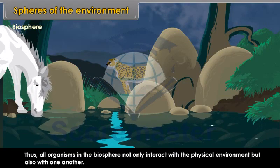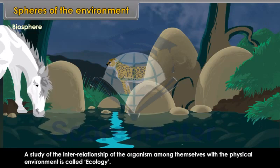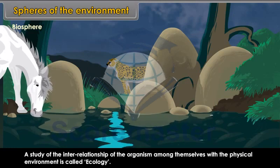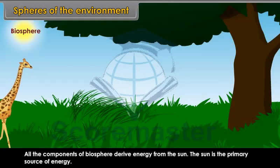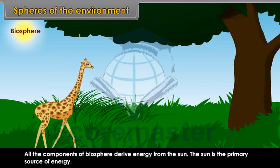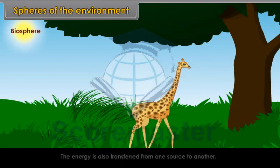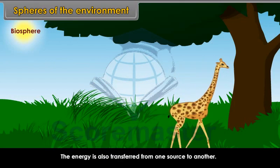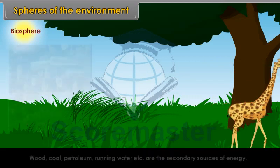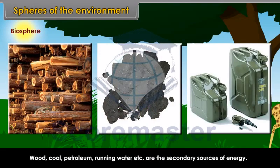A study of the interrelationship of organisms among themselves with the physical environment is called ecology. All the components of biosphere derive energy from the sun, which is the primary source of energy. The energy is also transferred from one source to another. Wood, coal, petroleum, running water, etc. are the secondary sources of energy. In the biosphere, there are two major components: the producers and consumers.